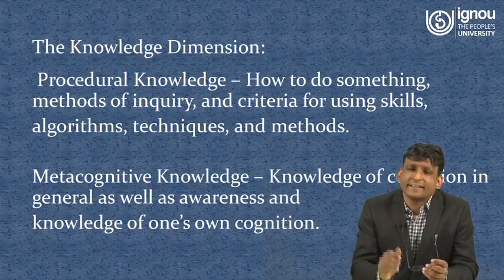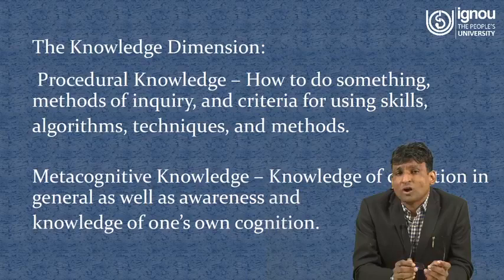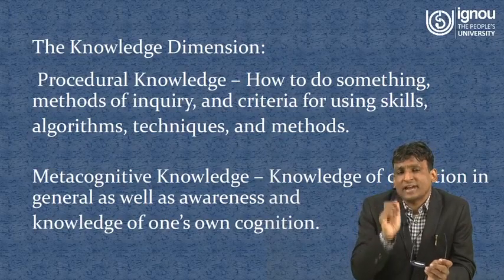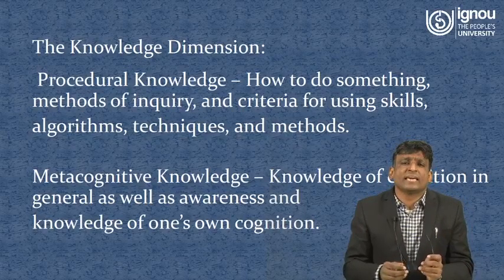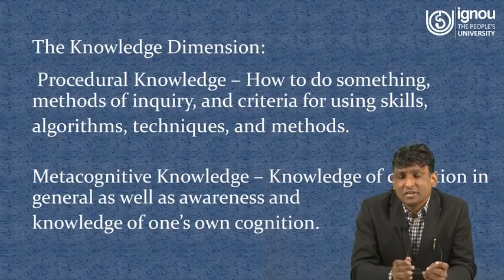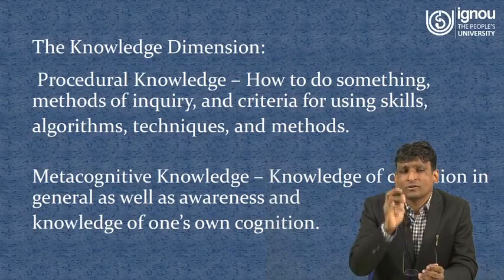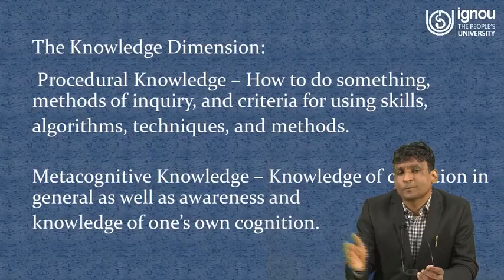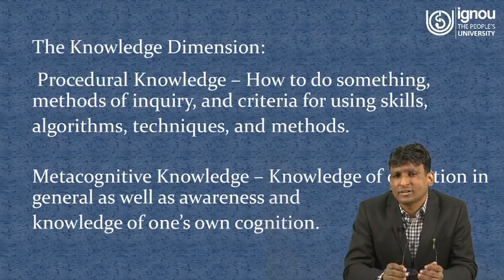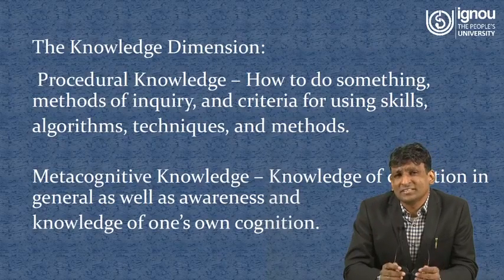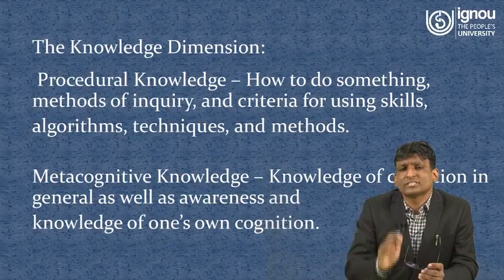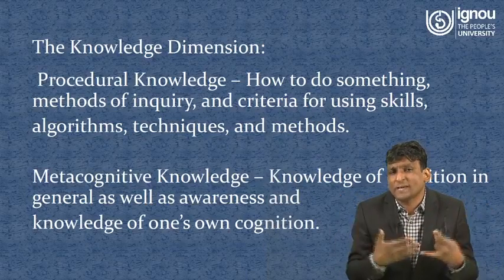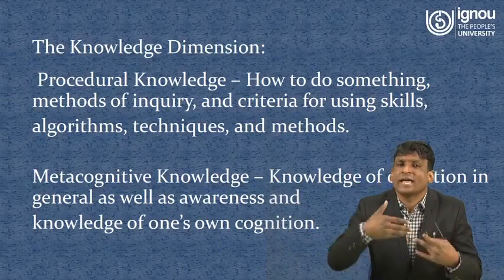It is also important that we look at procedural knowledge — how to do something. In our checklist, we can demarcate methods of inquiry, criteria for using skills, algorithms, techniques, and methods. In the times of artificial intelligence, these things matter even more. On top of it, there is metacognitive knowledge — knowledge of cognition in general, as well as awareness and knowledge of one's own cognition. At the level of micro and macro analysis, where you have concept and procedure before you, and the individual and the larger picture — thinking in that direction will count very much.